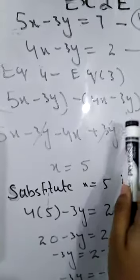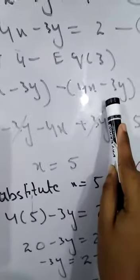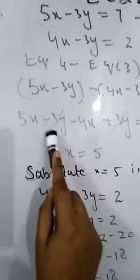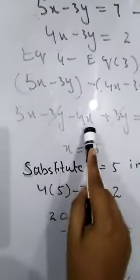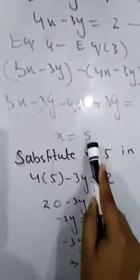Minus minus plus, 3y is equal to 7 minus 2. 3y minus 3y would eliminate. 5x minus 4x is x, and 7 minus 2 is 5. So x is equal to 5.